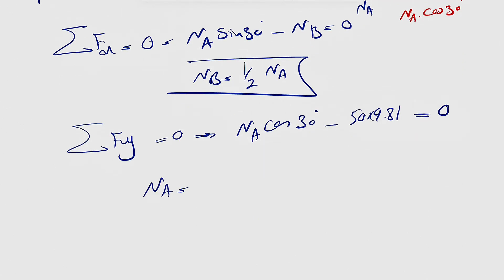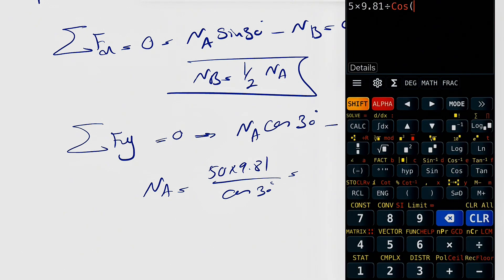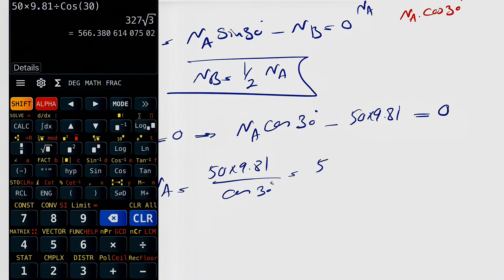So NA would be basically 50 times 9.81 divided by cosine of 30 degrees. Let's see what we get: 50 times 9.81 divided by cosine of 30. That's going to give us 566.38 Newtons. That's our NA.